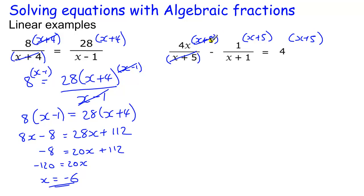This pair of x plus 5 cancel, giving me 4x minus 1 lot of x plus 5, which is just x plus 5, over x plus 1.